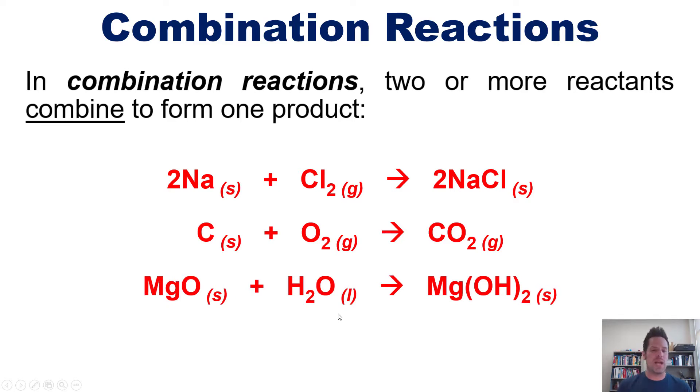Anytime your chemical reaction has two or more things on the left, that is two or more reactants and only one product, it's a combination reaction because things on the left are combining over the process to yield or produce only one product.